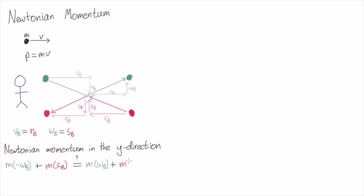Now because the balls have the same velocity, we have vb equals rb and wb equals sb. And so the momentum before the collision is the same as the momentum after the collision. So momentum is conserved.